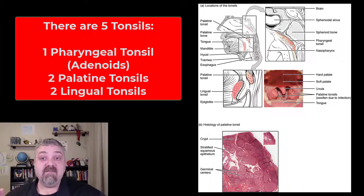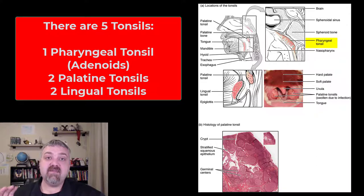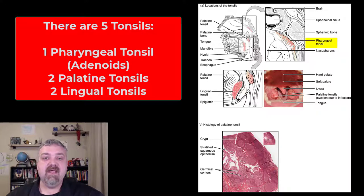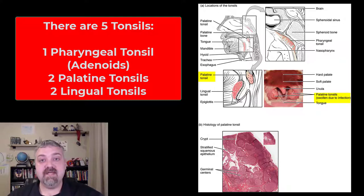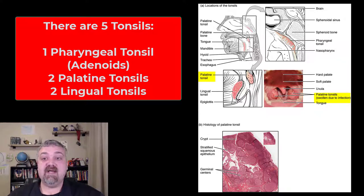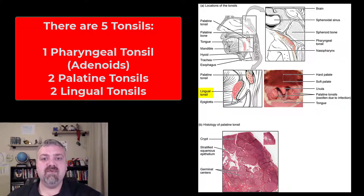Specifically, there are five tonsils in the pharynx, in the throat. You see that singular pharyngeal tonsil in the back of the throat — that's the one commonly called the adenoids when it's swollen. And then you have the pair, the two palatine tonsils. These are the tonsils most likely removed if they're swollen, as you can see some swollen tonsils there. A tonsillectomy is usually the removal of those two palatine tonsils. And then you have the two lingual tonsils there in the throat behind the tongue. So there are a total of five tonsils.